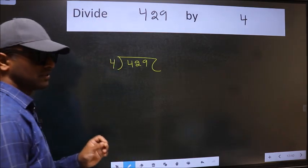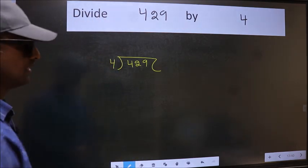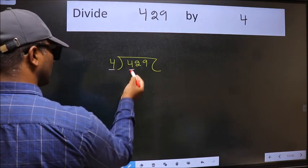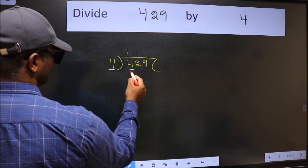This is step 1. Here we have 4 and here also 4. When do we get 4 in the 4 table? 4 ones are 4.